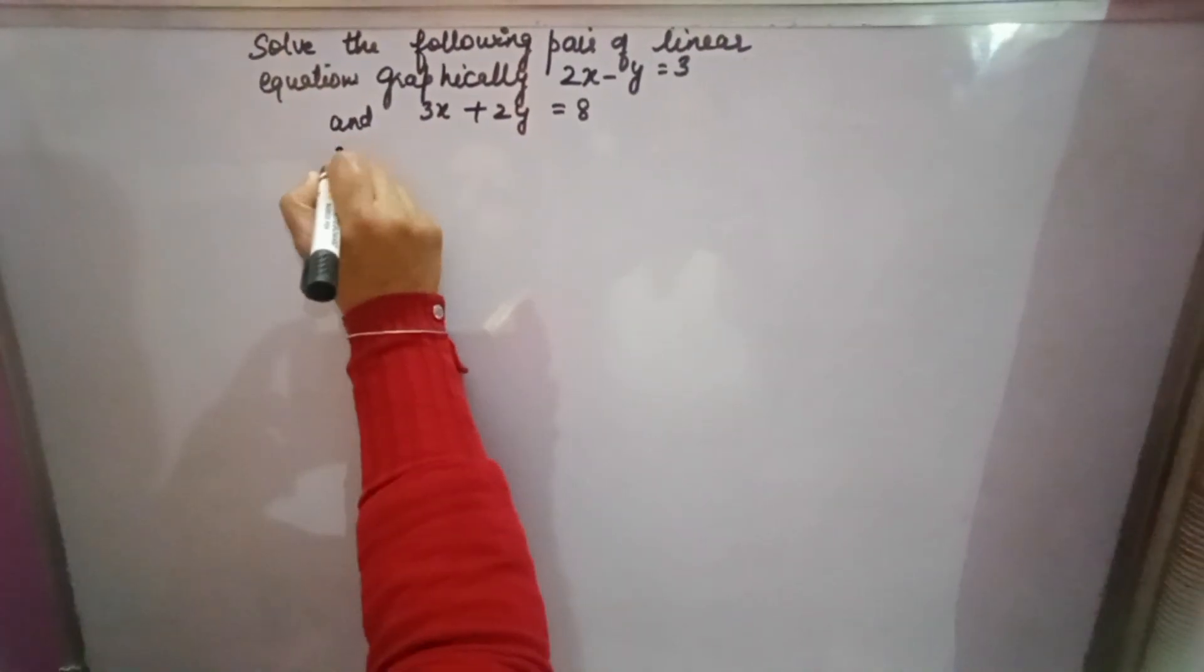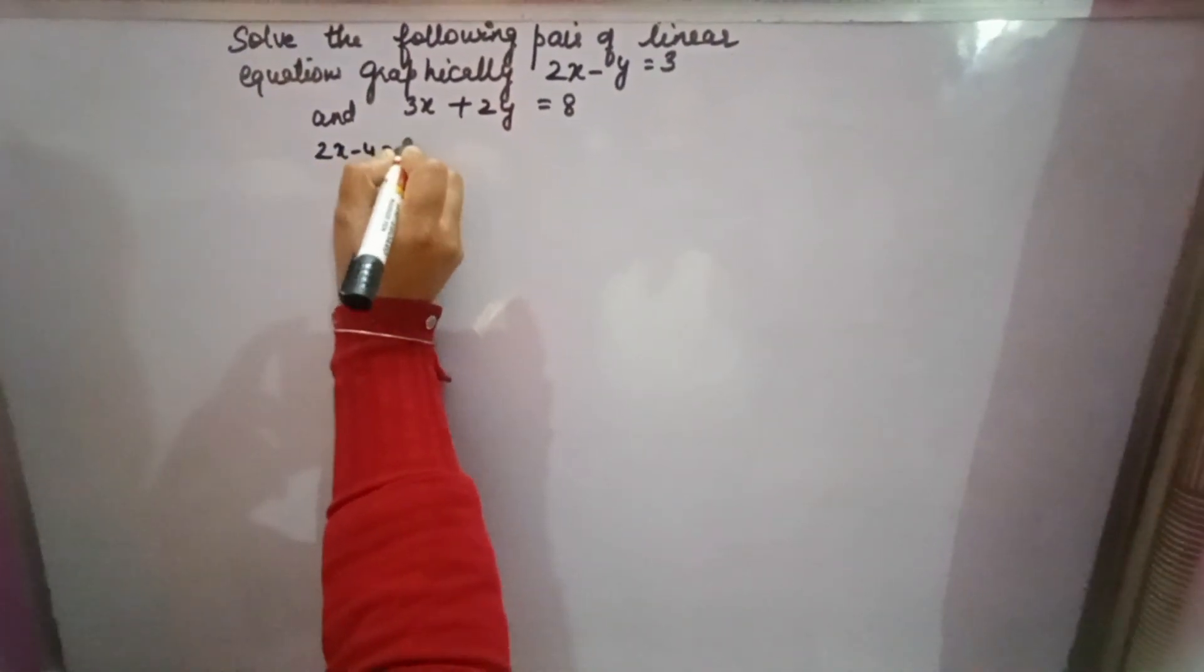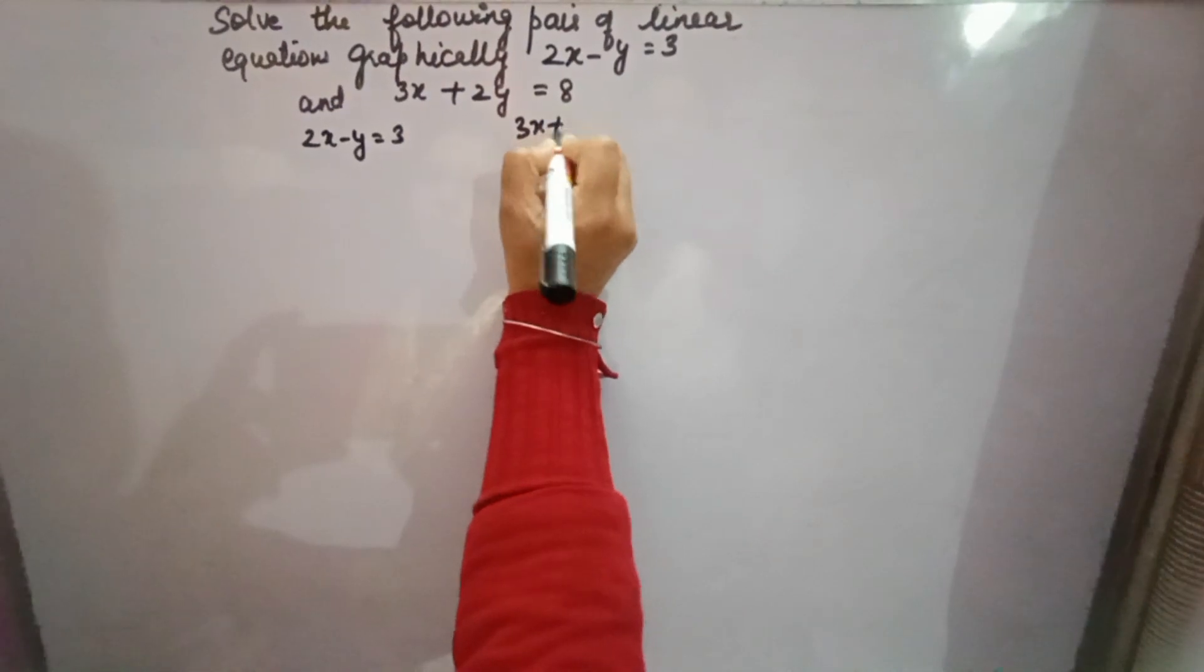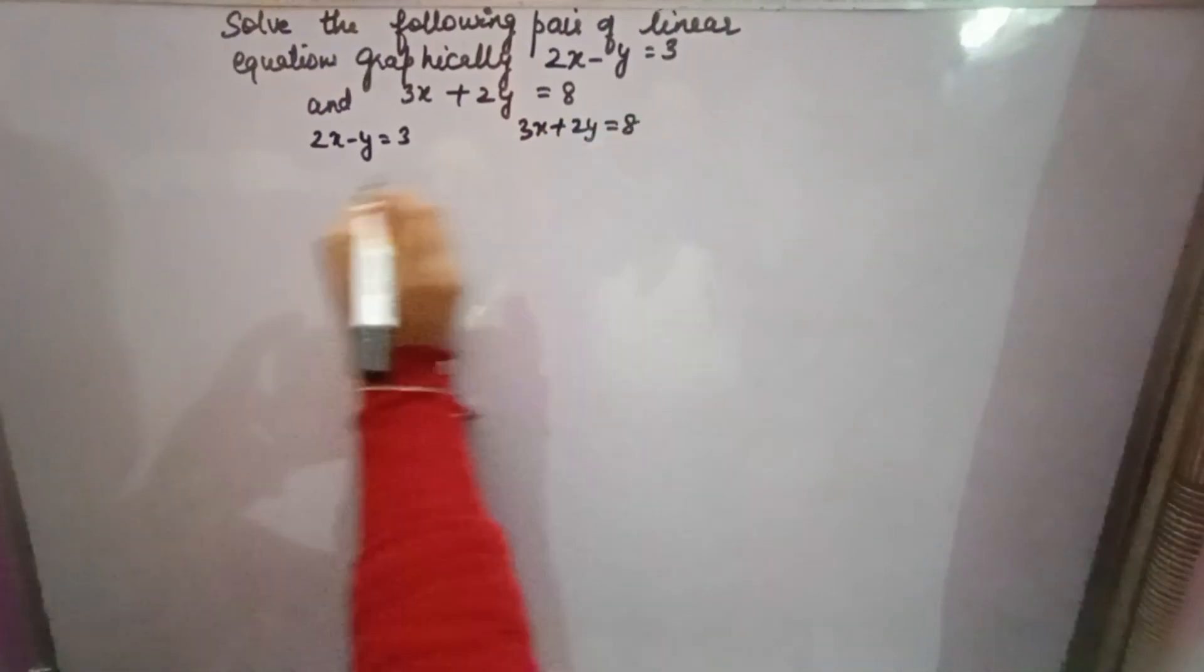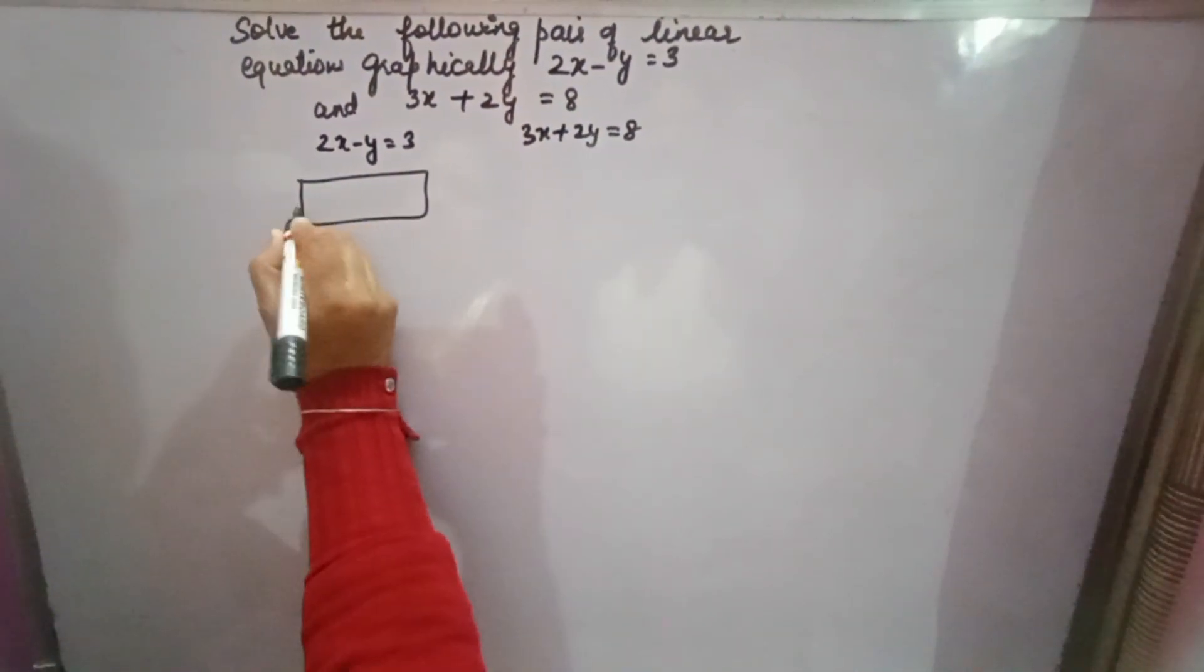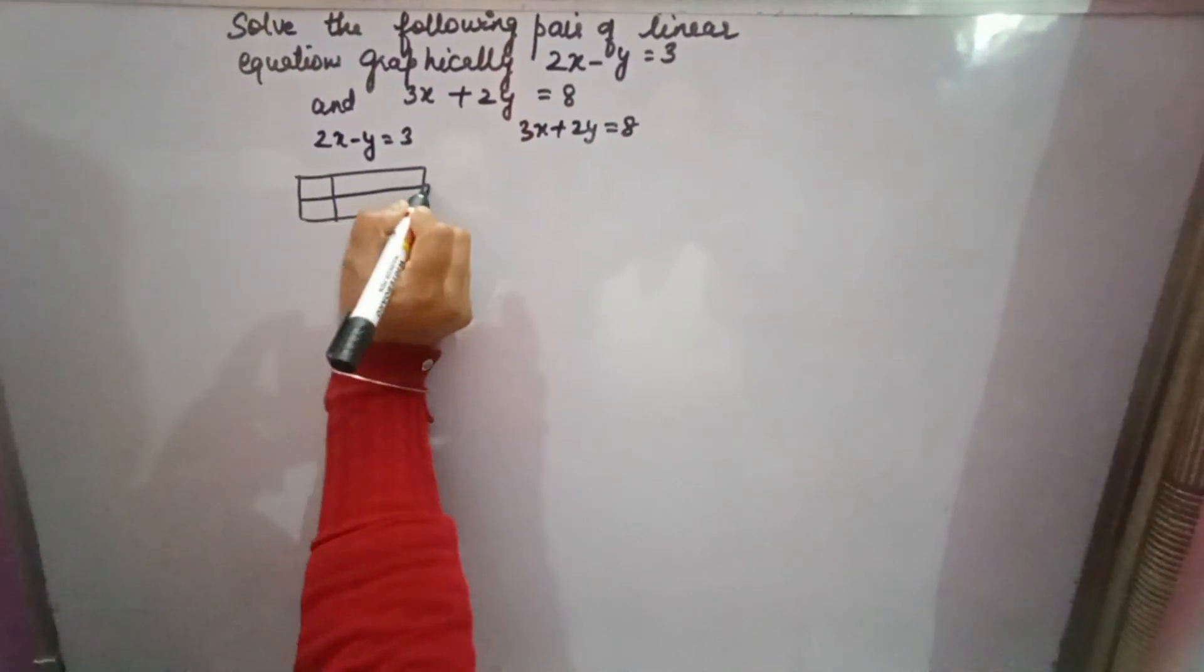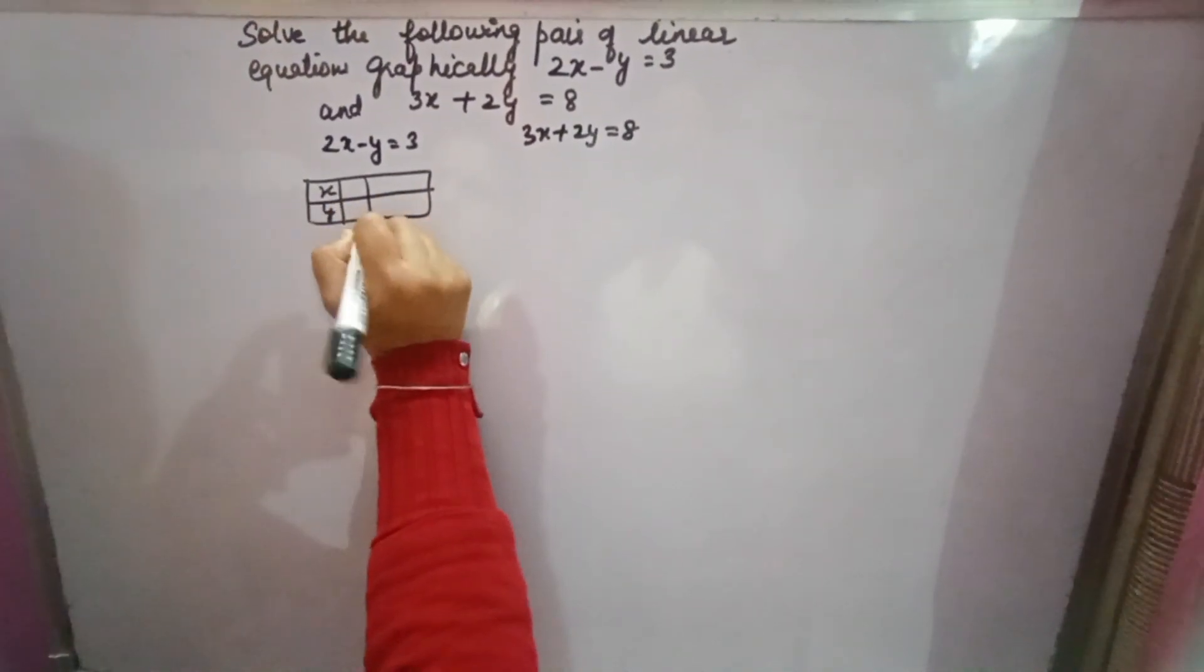Solve the following pair of linear equations graphically. The first equation is 2x minus y equals 3. The second is 3x plus 2y equals 8. We will make a table.